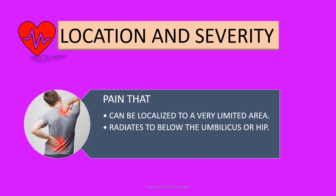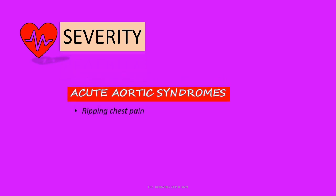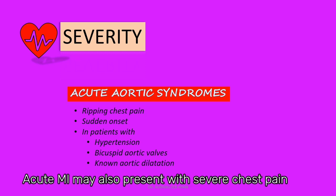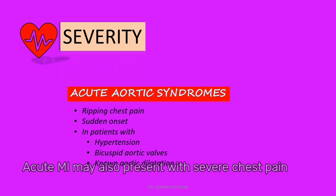Regarding location and radiation, pain that can be localized to a very limited area, or that radiates to below the umbilicus or hip, is unlikely to be of ischemic origin. Any patient with ripping chest pain that is sudden in onset — particularly in patients with hypertension, bicuspid aortic valve, or aortic dilatation — acute aortic syndromes should be suspected. These include acute aortic dissection, dissecting hematoma, or penetrating atherosclerotic ulcers.